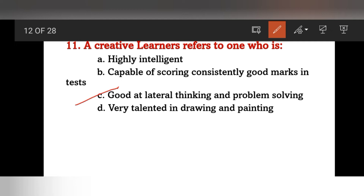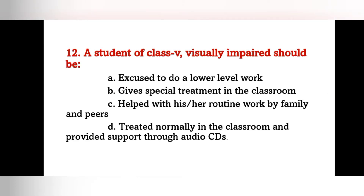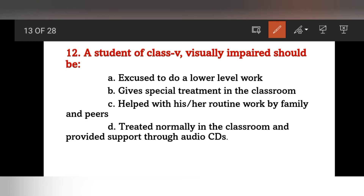A student of class who is visually impaired should be: excused to do lower level work, given special treatment in the classroom, helped with routine work by family and peers, or treated normally in the classroom with support through audio series? The answer is D — treated normally and provided support through audio series.